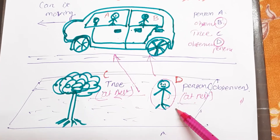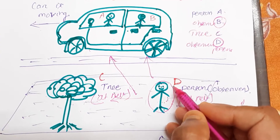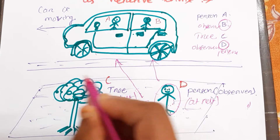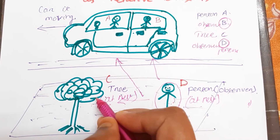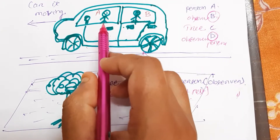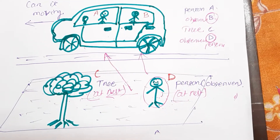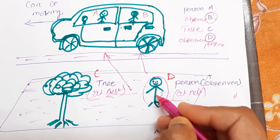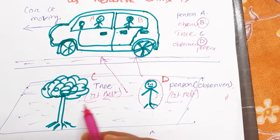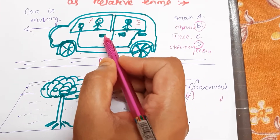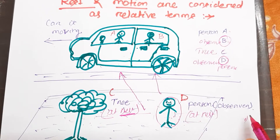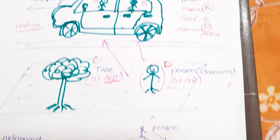Now, observer D outside the car sees that the tree is at rest — it is not moving. But he observes that persons A and B are both in motion. So when a person compares an object at rest, only then can he compare another object in motion. That is why rest and motion are both relative terms.